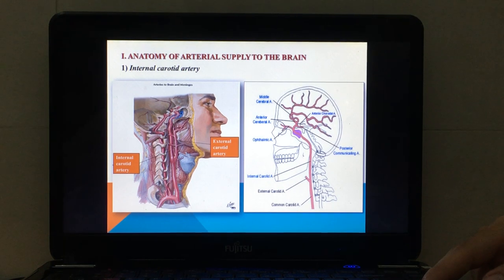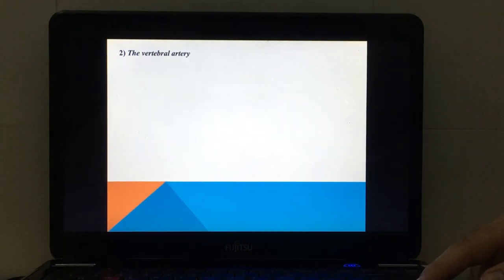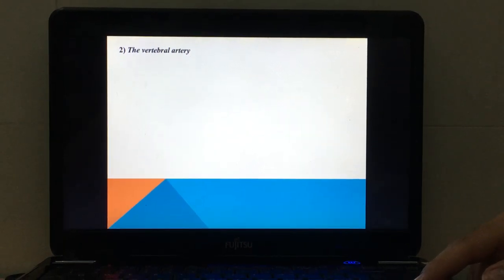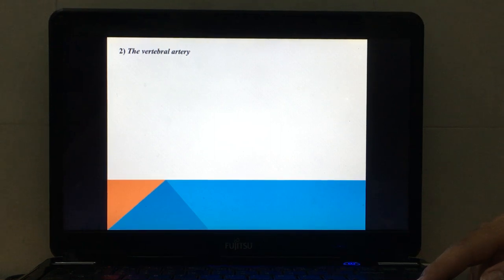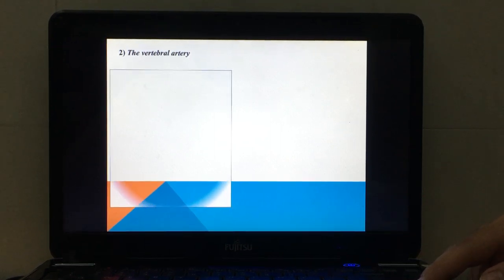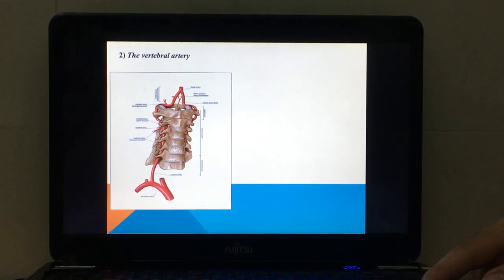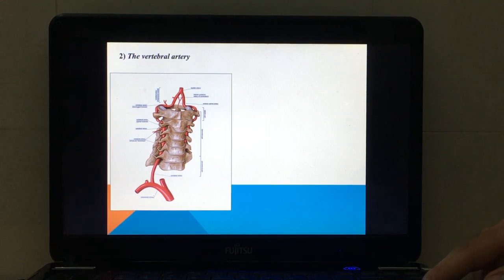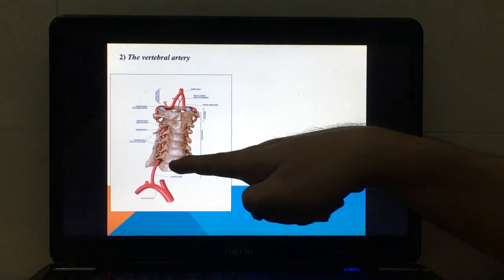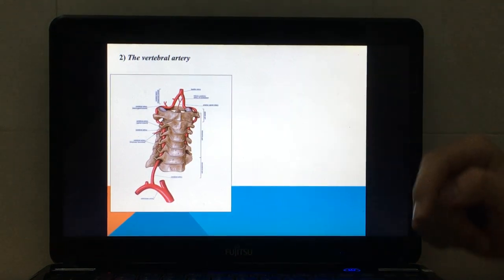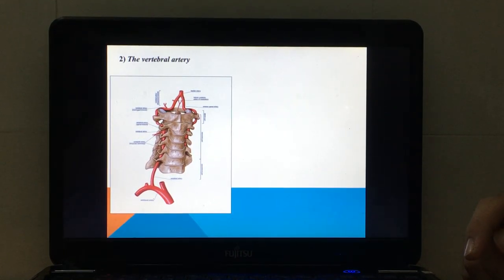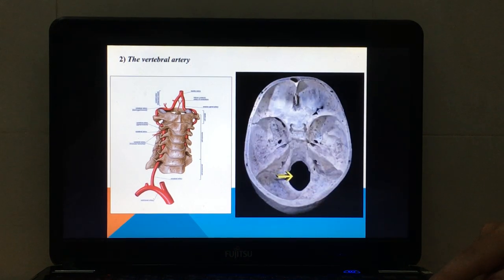Second, the vertebral arteries. They are the first branches of the subclavian arteries in the root of the neck. They ascend through the transverse foramen of vertebra C6 to C1. They enter the cranial cavity through the foramen magnum and...